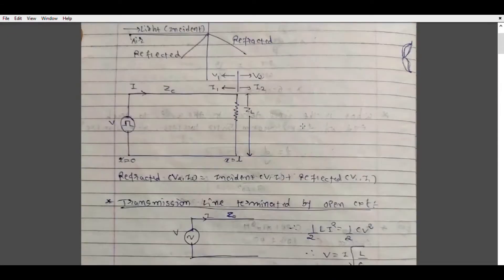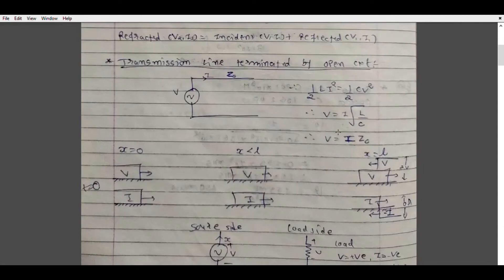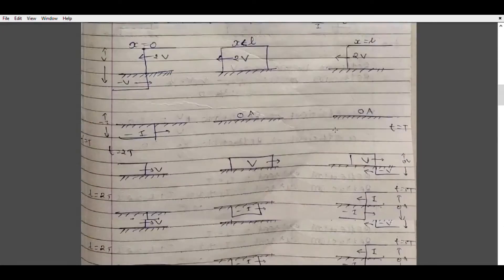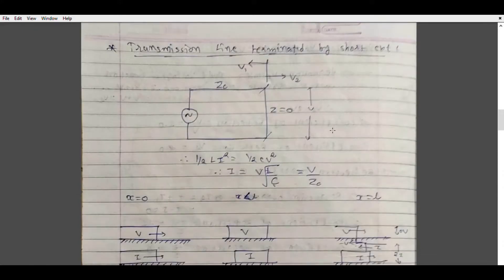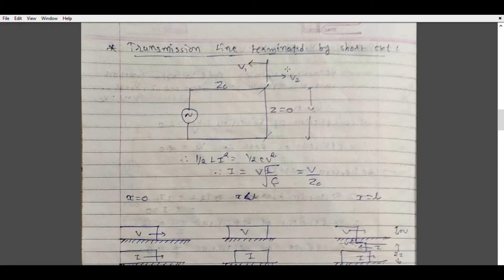If you understand the transmission line terminated by the open circuit, you can easily understand the transmission line terminated by the short circuit. The speed of this part will be somewhat higher. Let's say transmission line having source voltage V, transmission line impedance Zc, terminated by short circuit. So obviously the impedance is zero. Source voltage is V, reflected voltage is V1 and refracted voltage is V2.